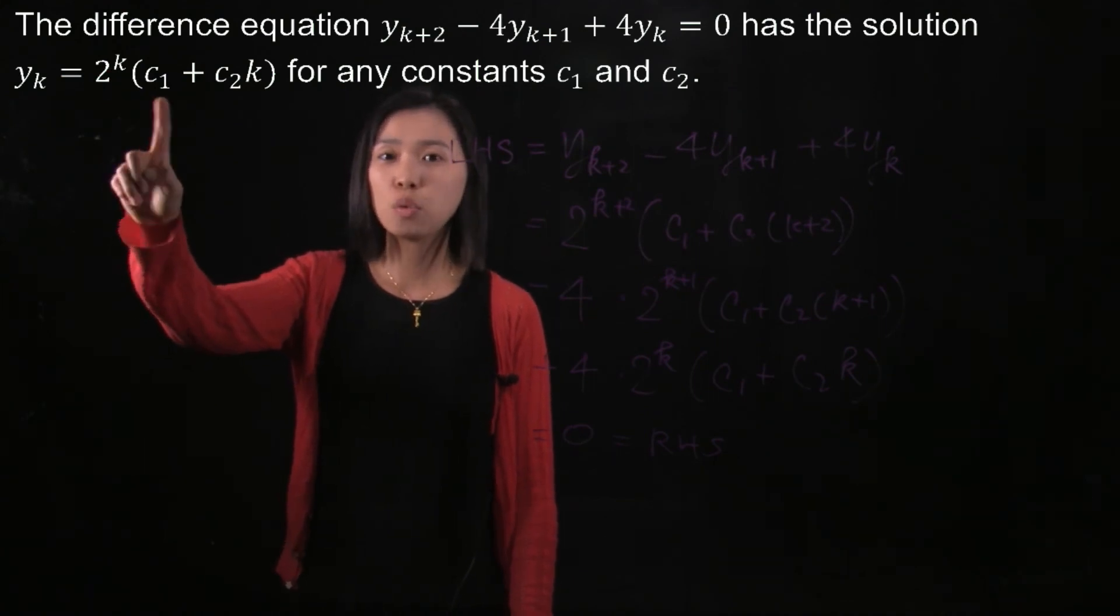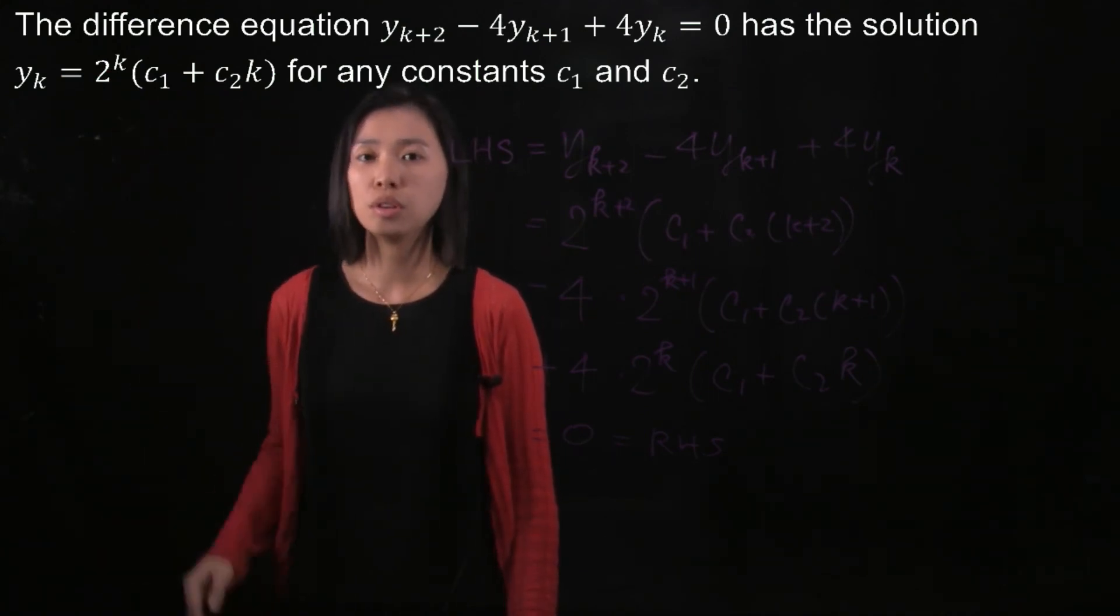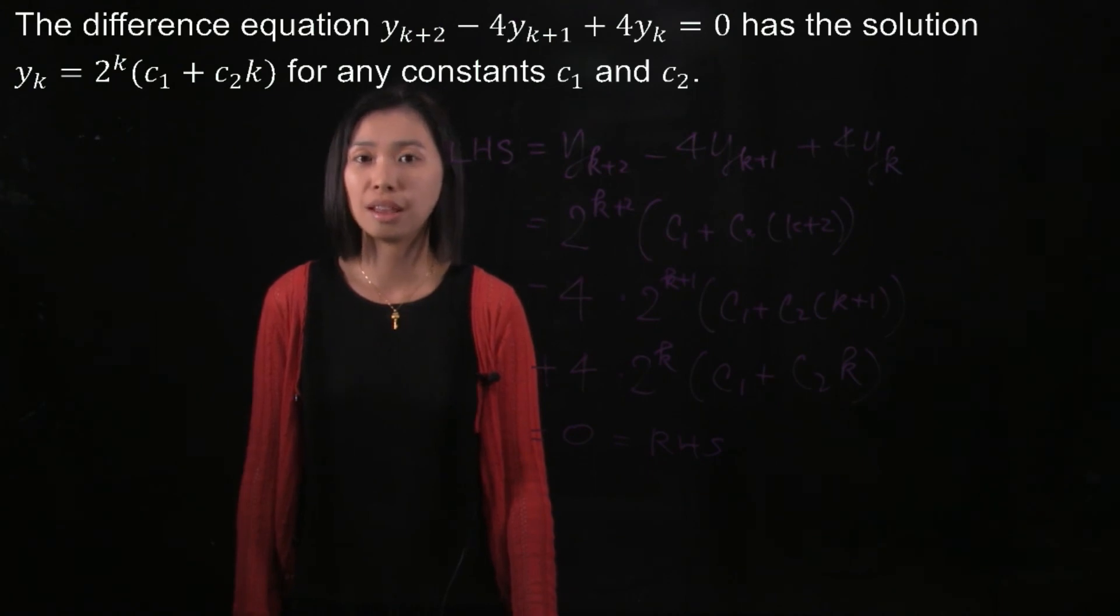But if you want to find c_1 and c_2, the exact number, you need an initial condition. And then the solutions will be a particular solution.